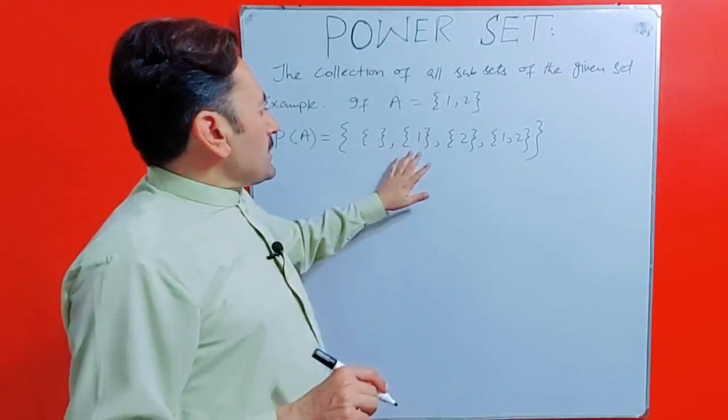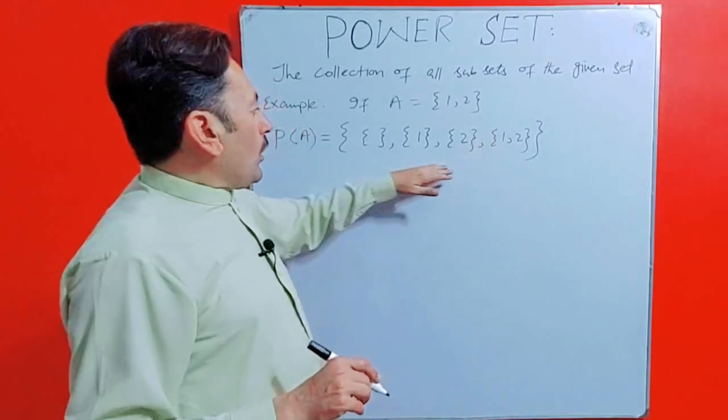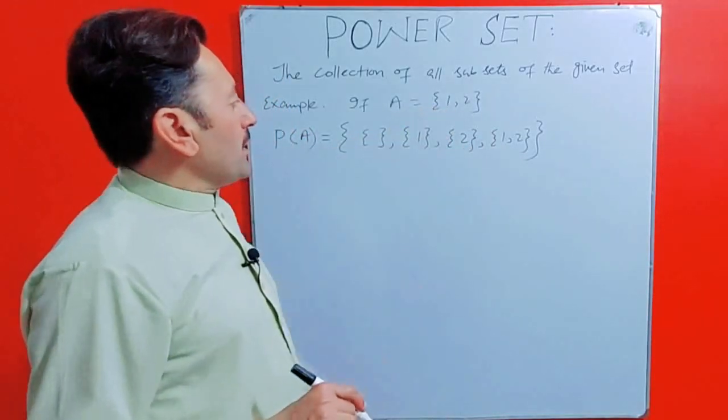That is empty set, set {1}, set {2} and set {1, 2}. All these are the subsets of set A.